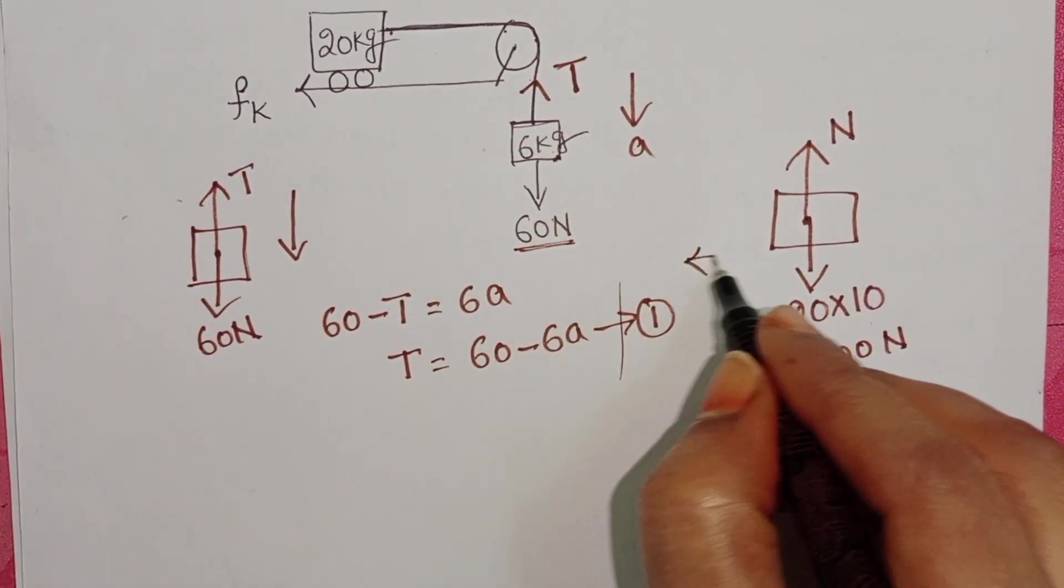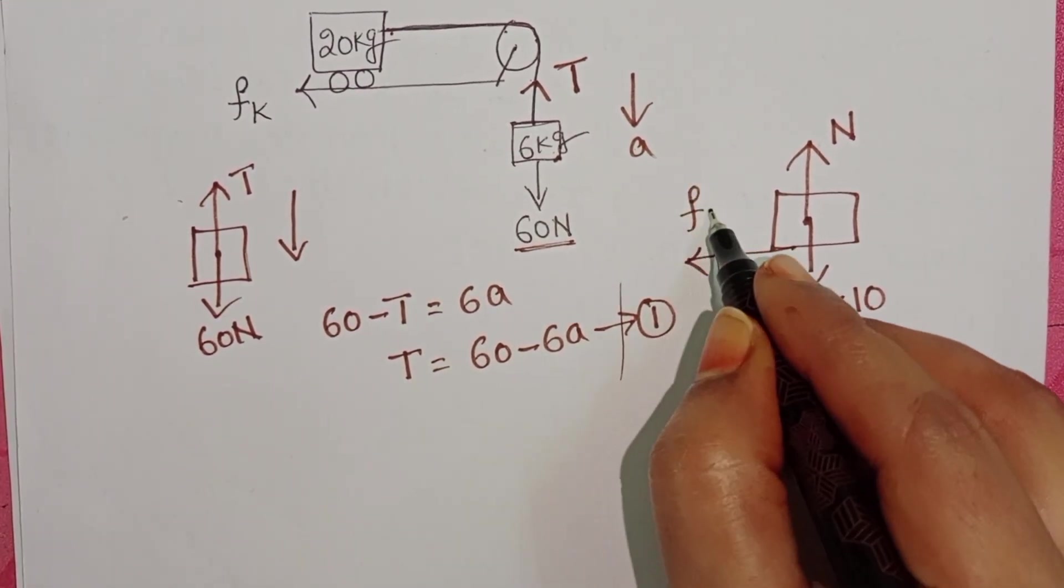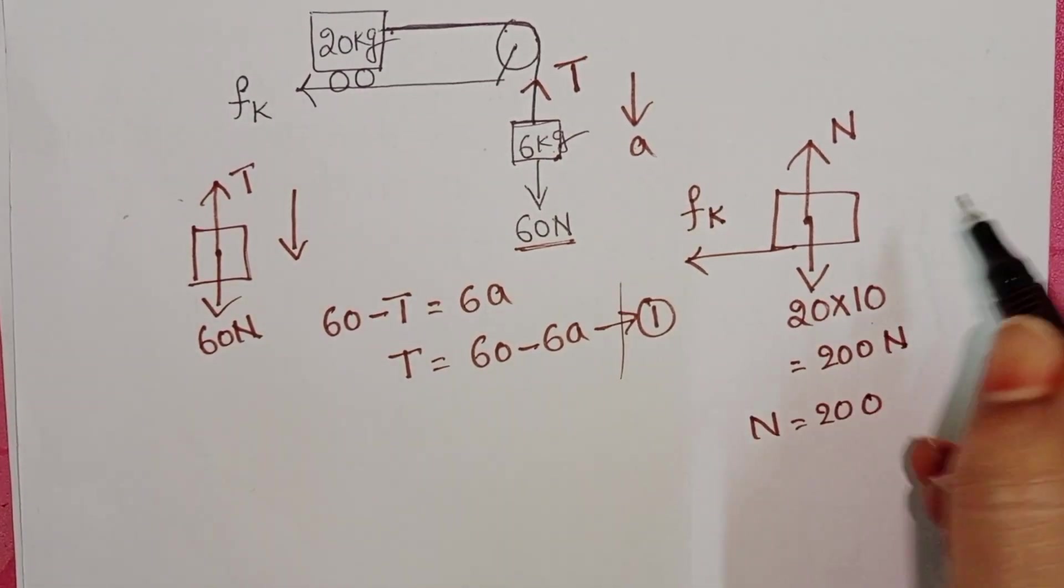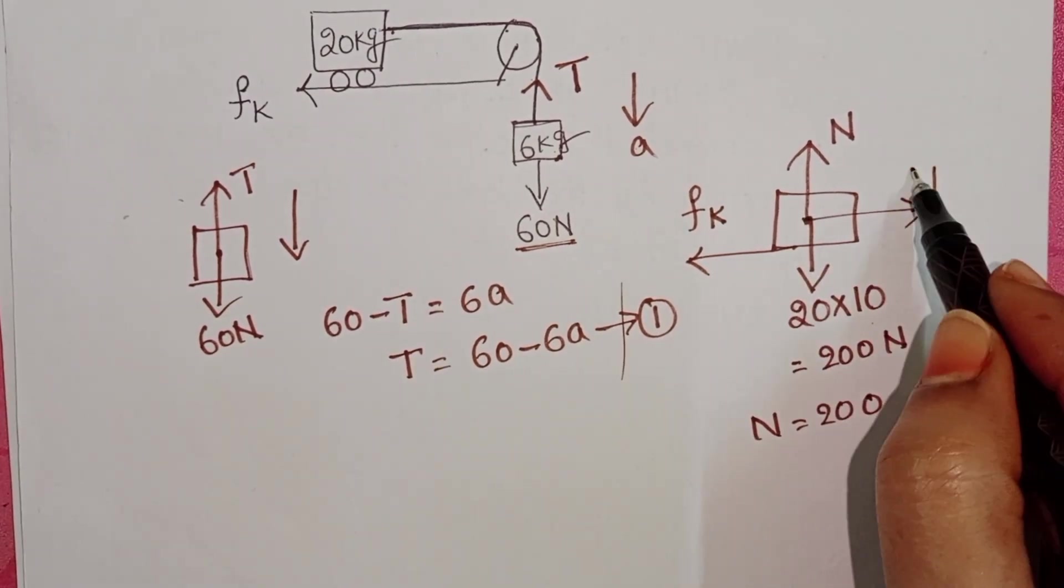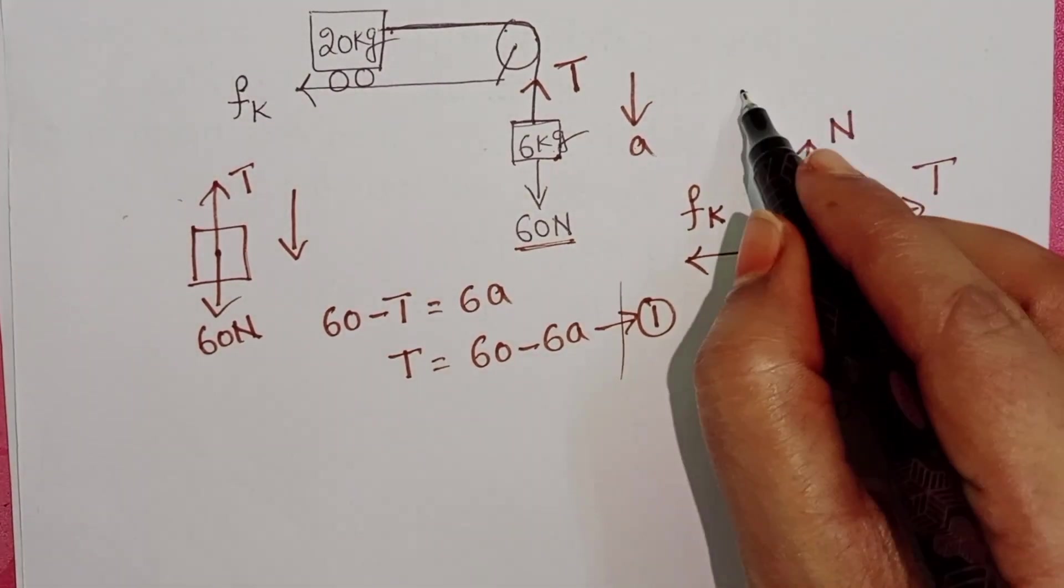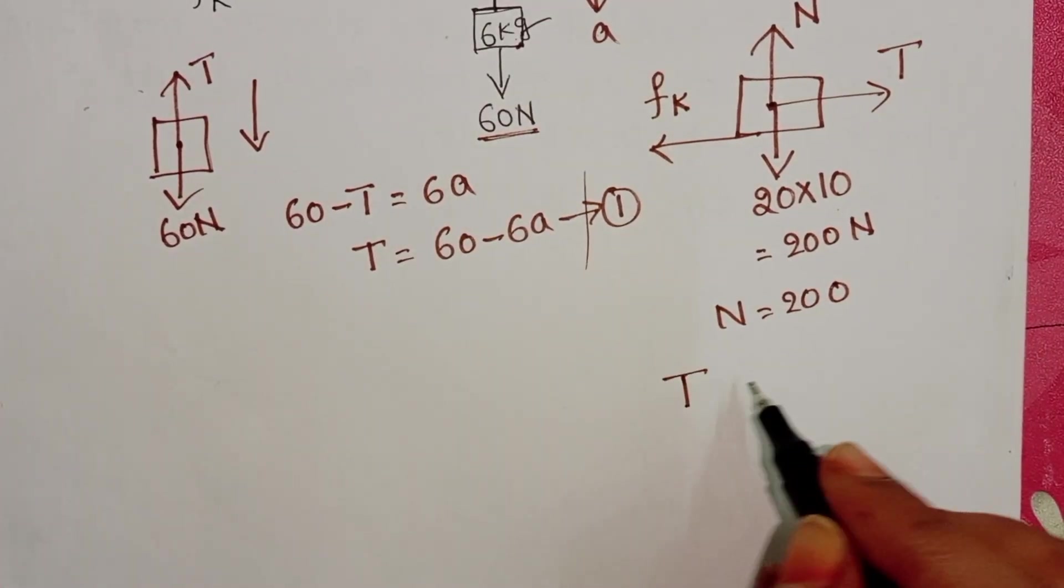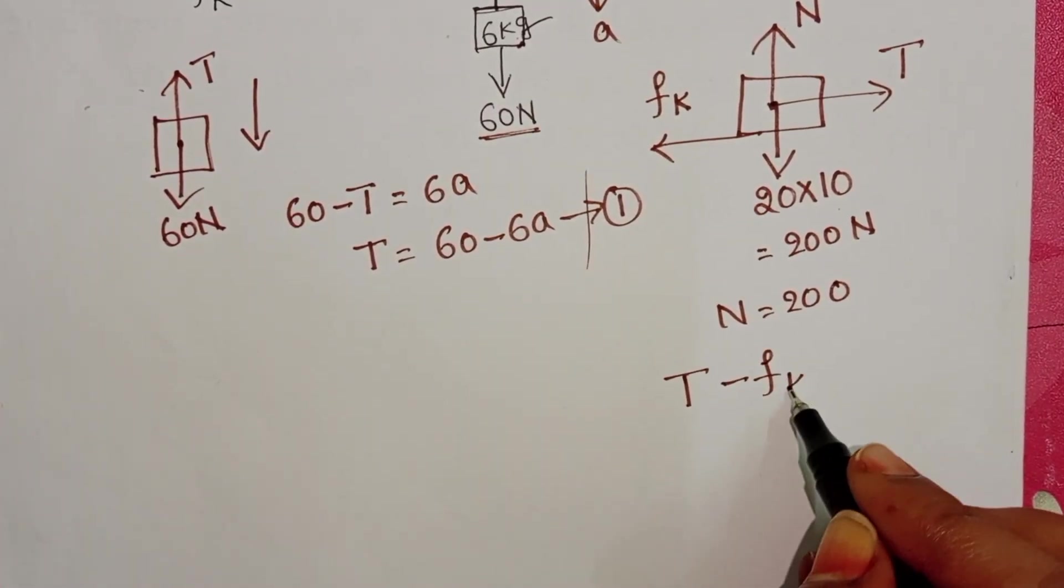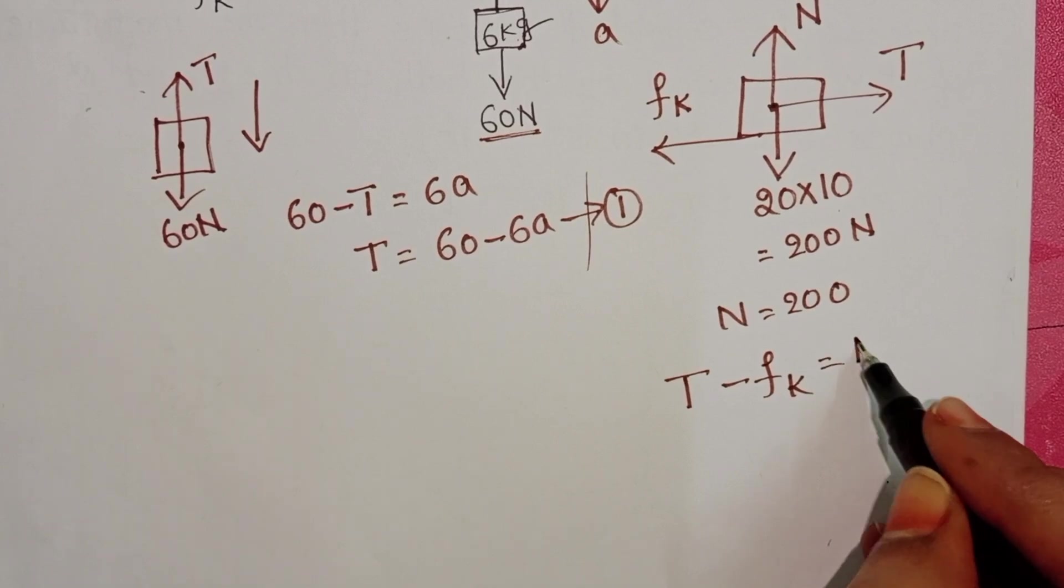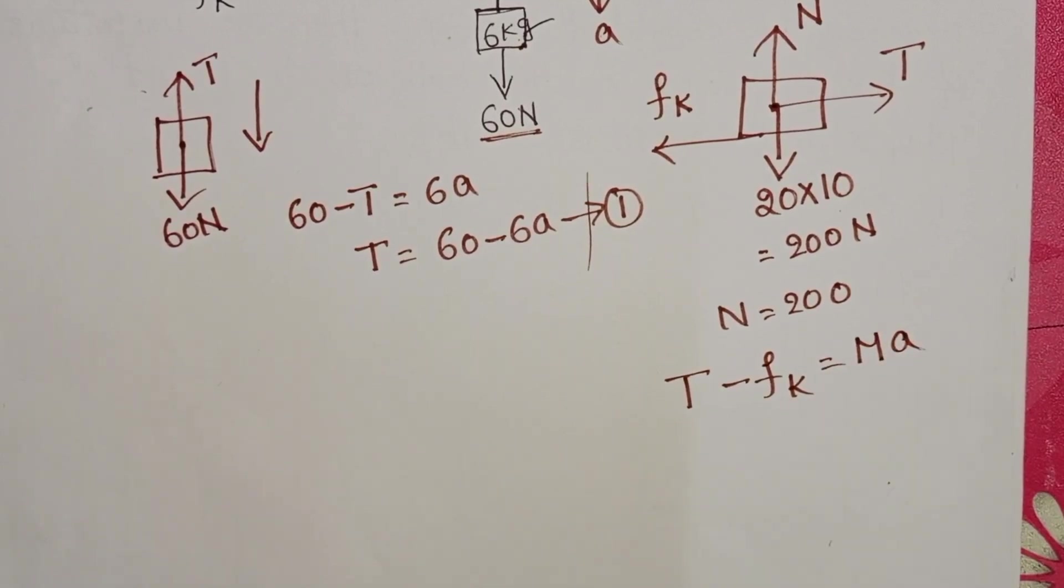And in this direction, frictional force - kinetic friction - and tensional force to the right side. Resultant acceleration is to the right side. T minus frictional force equals mass of the trolley into acceleration.